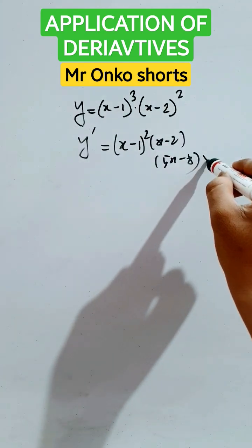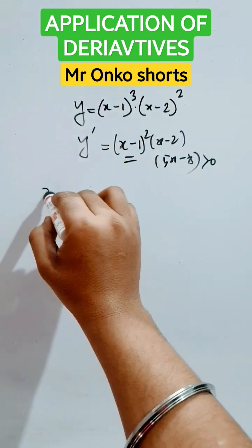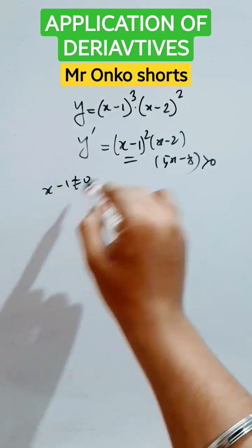This must be greater than 0 for the increasing case. Since this is squared, x minus 1 can't be 0. Otherwise, this is positive.